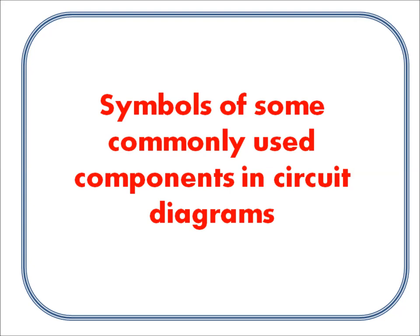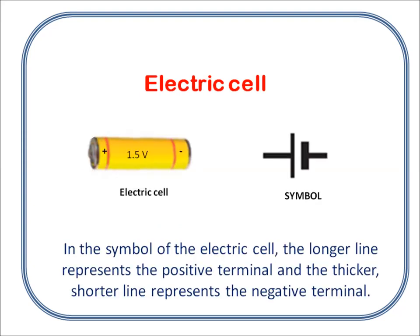Symbols of some commonly used components in circuit diagrams. In the symbol of electric cell, the longer line represents the positive terminal and the thicker, shorter line represents the negative terminal.